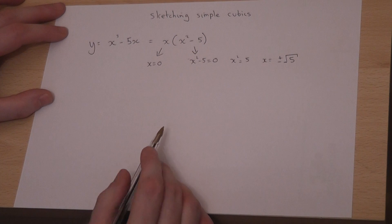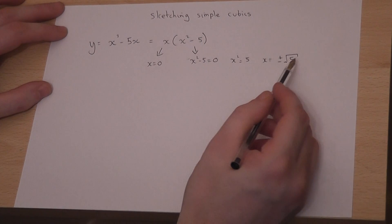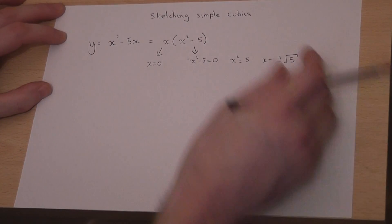So the graph hits the x-axis at 0, plus root 5, and minus root 5. So if I had to sketch this graph,